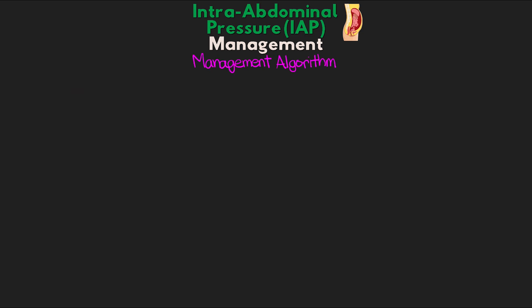Now let's talk about our actual management algorithm. Prior to reaching the point of abdominal compartment syndrome, we have many non-surgical interventions to try and decrease intra-abdominal pressure and prevent that progression from intra-abdominal hypertension to abdominal compartment syndrome. We begin by determining if our patient's intra-abdominal pressure is greater than 12 millimeters of mercury. If it is, we would then begin to initiate treatment modalities to reduce intra-abdominal pressure. Our goal here is to both reduce intra-abdominal pressure as well as optimize organ perfusion.